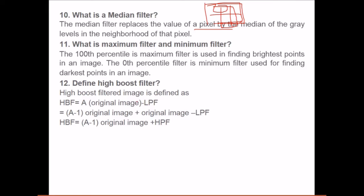What is high boost filter? High boost filter image is defined like this: HDF is equal to original image minus LPF. We subtract the low pass filter from the original image, then add A minus 1 times the original image minus LPF, which equals the original image plus high pass filter. We subtract the low pass filter and add the high pass filter. This is high boost filter.